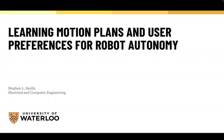Welcome everyone to this week's Autonomy Talks. It's a great pleasure to have Professor Steven Smith, an associate professor in the Department of Electrical and Computer Engineering at the University of Waterloo in Canada, where he holds a Canada Research Chair in Autonomous Systems. He received his BSc from Queen's University, his MSc from the University of Toronto, and his PhD from UC Santa Barbara working with Francesco Bullo, followed by a postdoc at MIT's Computer Science and AI lab. Today's talk is about learning motion plans and user preferences for robot autonomy.